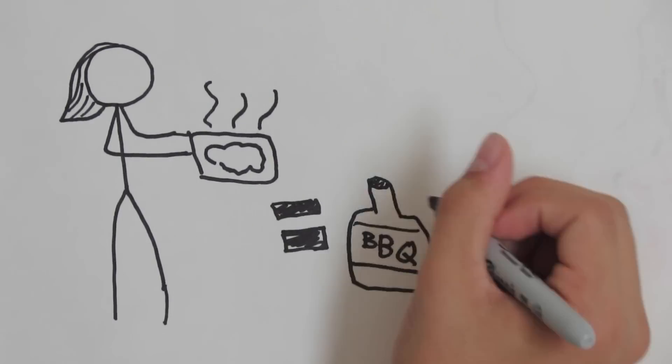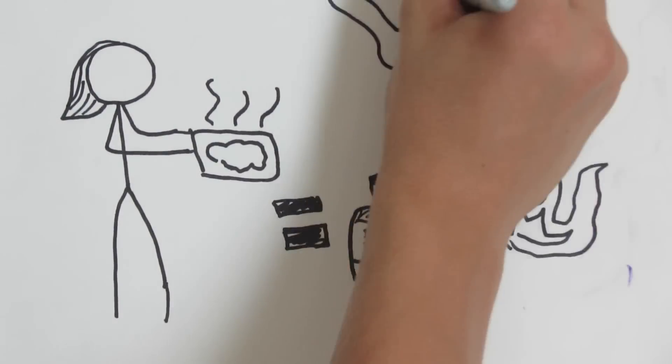You may have noticed that when your mother cooks ribs, you are attracted to it. This is because of the smoky goodness of barbecue sauce.